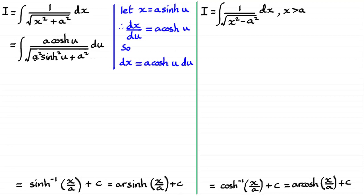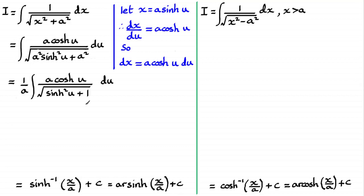The integral becomes a·cosh(u) du over the root of a²·sinh²(u) + a². We can pull out a squared as a common factor under the root, giving a²·(sinh²(u) + 1), and then take the square root of a², bringing it out as 1 over a. Now, sinh²(u) + 1 equals cosh²(u), using the identity cosh²(u) − sinh²(u) = 1, rearranged.